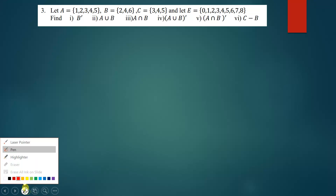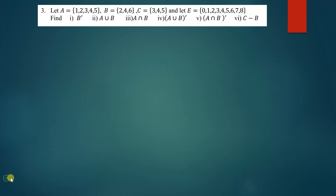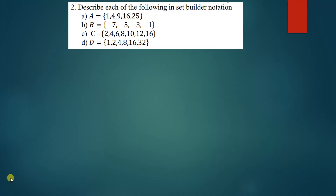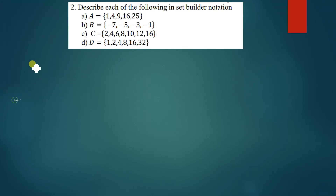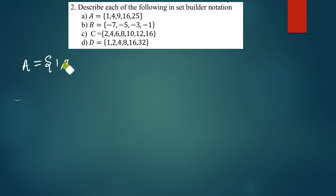Let's quickly begin to solve the questions. We have a number of questions. This question says: describe each of the following in set builder notation. The first question we have is set A, which is equal to {1, 4, 9, 16, 25}.